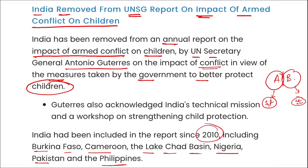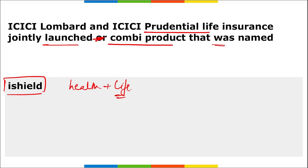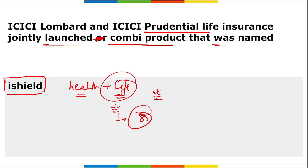ICICI Lombard and ICICI Prudential Life Insurance have jointly launched a combi product named 'iShield.' This is a combined health and life insurance solution. The health insurance component covers hospitalization expenses, day care treatment, pre and post hospitalization, and tele consultations. The life insurance part will provide coverage up to the age of 85, ensuring sufficient financial resources for the family.